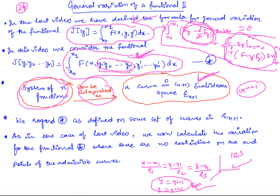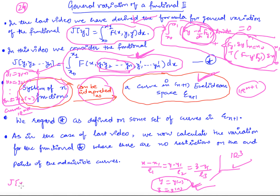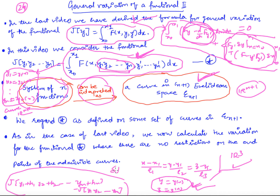We can treat the extremal of this functional as: y1 as a function of x, y2 as a function of x, and so on — yn as a function of x. This extremal can be treated as a curve in R^(n+1). We would now like to obtain the variation of this functional. We compute J of (y1+h1, y2+h2, ..., yn+hn) minus J of (y1, y2, ..., yn), and from this quantity we will obtain our variation delta J.